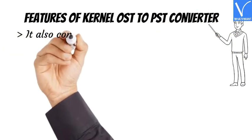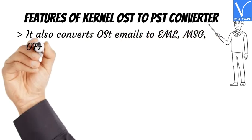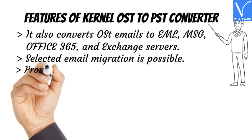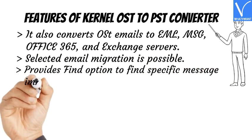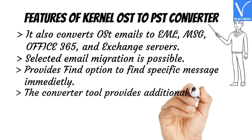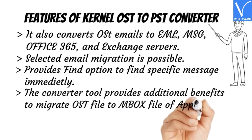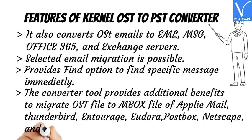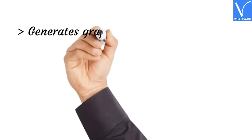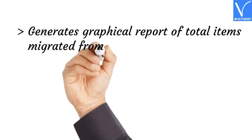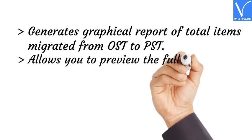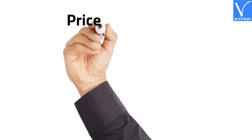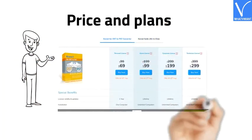Features of Kernel OST to PST Converter: It converts OST emails to EML, MSG, Office 365, and Exchange servers. Selected email migration is possible. Provides a find option to locate specific messages immediately. The converter tool also migrates OST files to MBOX format for AppleMail, Thunderbird, Entourage, Eudora, Postbox, Netscape, and many more. Generates a graphical report of total items migrated from OST to PST. Allows you to preview the full OST mailbox items. It is compatible with all Microsoft Outlook versions. Price and plans are exhibiting on the screen.